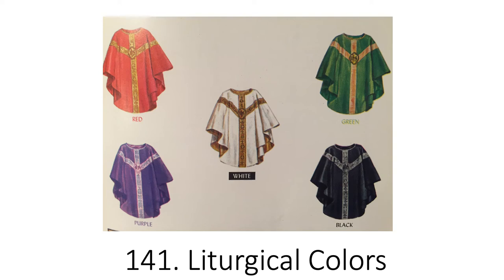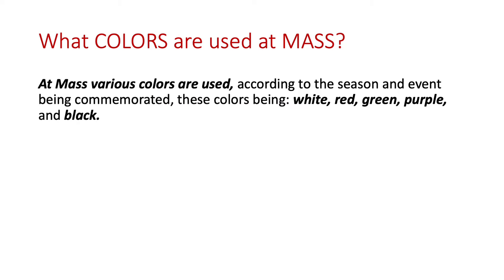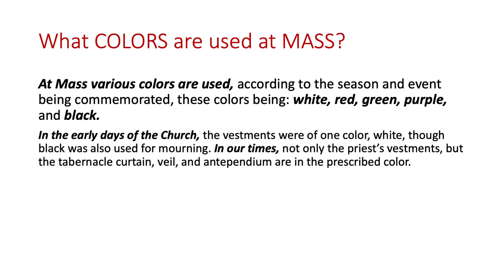Lesson 141: Liturgical Colors. What colors are used at Mass? At Mass, various colors are used according to the season and event being commemorated. These colors are white, red, green, purple, and black. In the early days of the Church, the vestments were of one color — white — though black was also used for mourning.